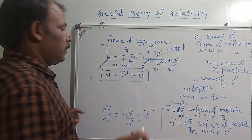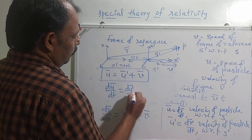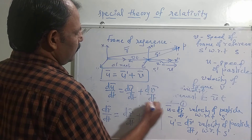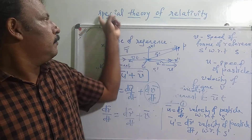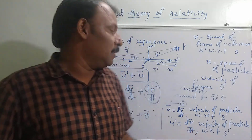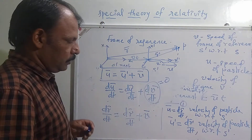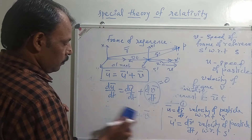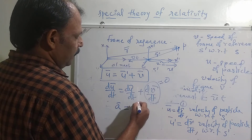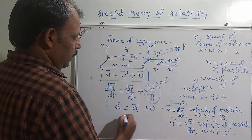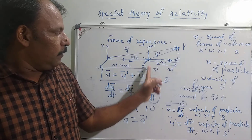Taking the differential of velocity we obtain the acceleration: DU/DT equals DU prime/DT plus DV/DT. Since S prime is moving with uniform speed, for an inertial frame DV/DT equals 0. Therefore DU/DT equals DU prime/DT, which gives us A equal to A prime, where A is the acceleration of the particle with respect to frame S and A prime is the acceleration with respect to frame S prime.